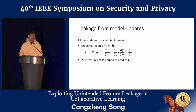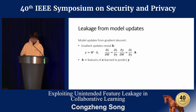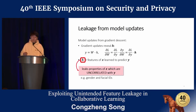Recall that model updates are computed from gradient descent. We find that gradient updates can leak h, which are the features of the input data learned by the model to predict the output y. In a simple example where y equals the parameter times h, the gradients of the parameters equal a scaled version of the features by chain rule, as shown by the equation here. A key observation is that even though the features h are learned to predict y, they can also leak properties of the input data which are uncorrelated with y. For example, if y are gender classes for a gender classification task, then features can also leak properties like facial IDs.